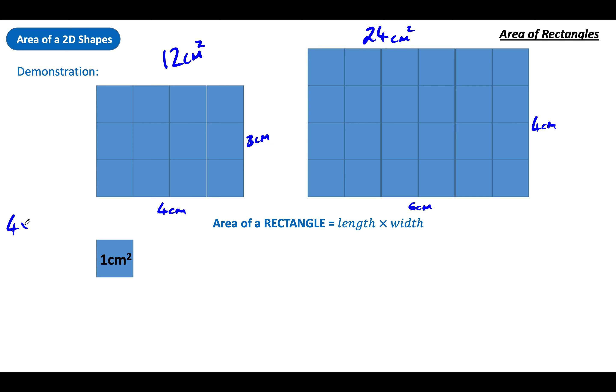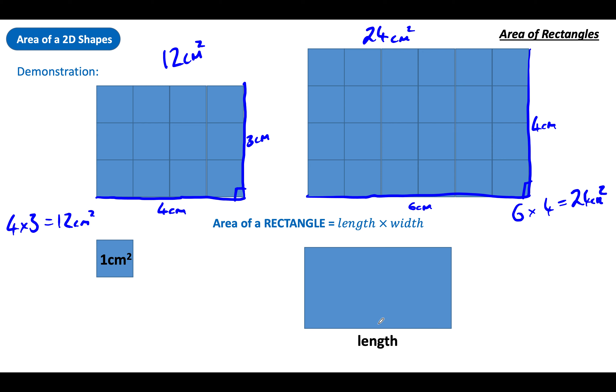This first one I would do the length of 4 times by the width of 3, and that would equal 12. This one over here would be 6 times by the 4, which is 24cm squared. Length times width. What we're doing is taking one length which goes all the way along the side of one rectangle, and the other length which goes off in the other direction. We need an L shape. If you're finding the area of a rectangle, you need an L shape. You need those two sides. It needs to be an L shape with a right angle in the corner. So if you times the length by the width, you get the area.